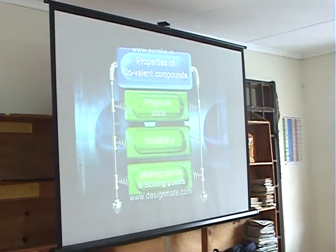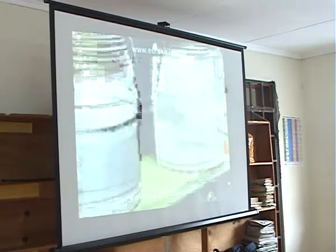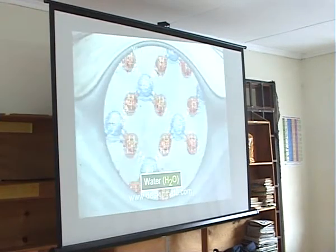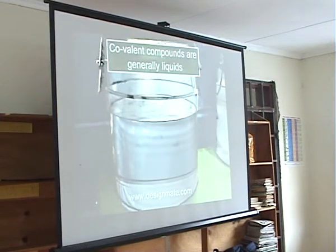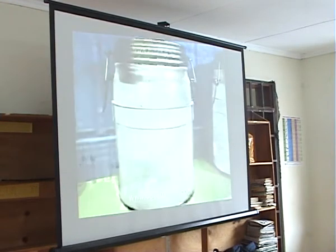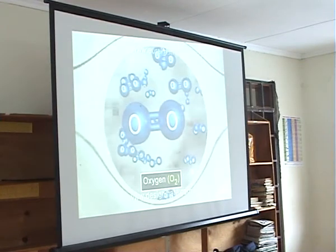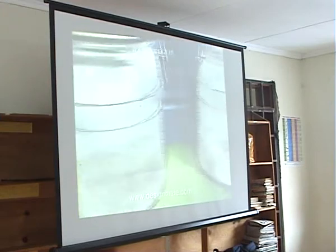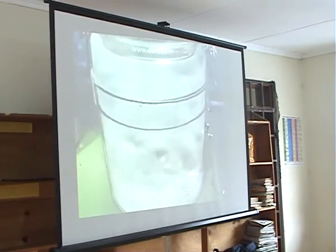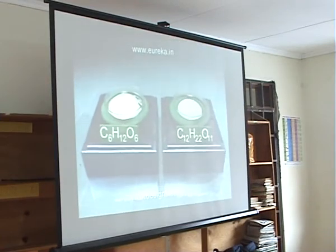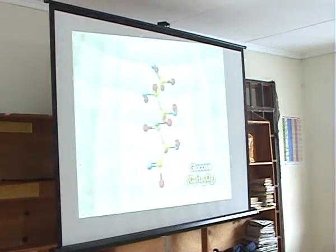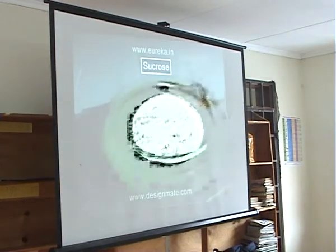Properties of covalent compounds. Physical state: covalent compounds are generally liquids — for example, water H2O — or gases at room temperature, for example, oxygen O2, carbon dioxide CO2, etc. However, some covalent compounds like glucose and sucrose are solids.